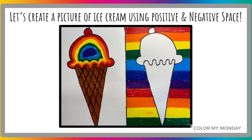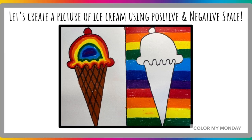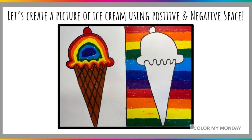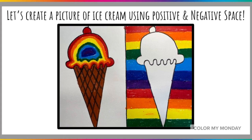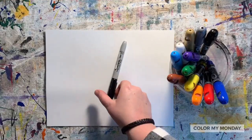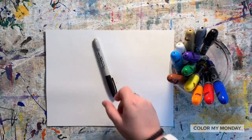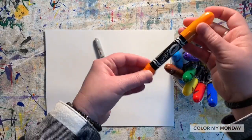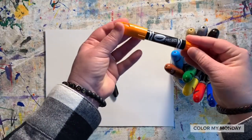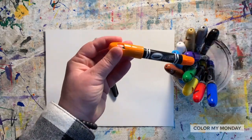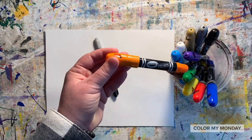Let's create a picture of ice cream using what we've learned about positive and negative space. Grab your paper, something to draw with, and something to add color. Today, I'll be using these Crayola sticks to color. You use whatever you have.